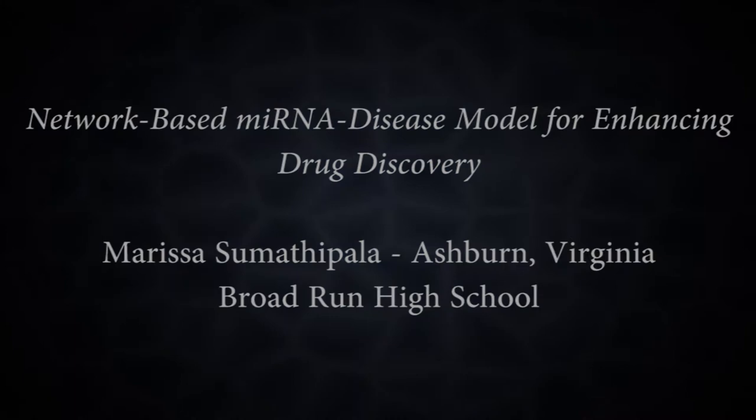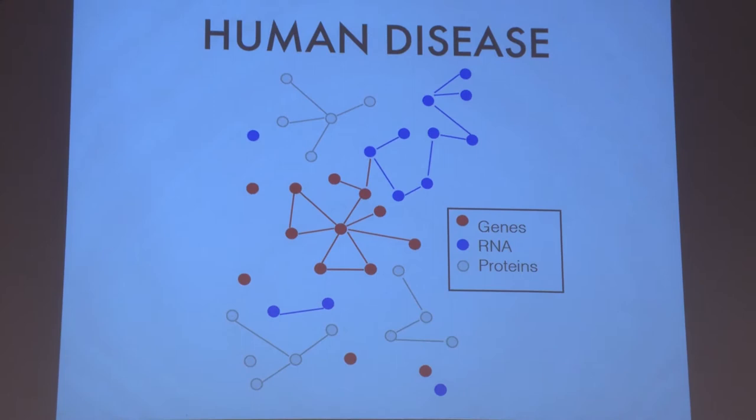The traditional perspective on disease is that they are the result of an abnormality in a single gene. However, in reality, diseases are the product of perturbations in complex interconnected cellular components like genes, RNA, and DNA. Given this, in order to deepen our understanding of disease etiology, a systems biology approach is needed.